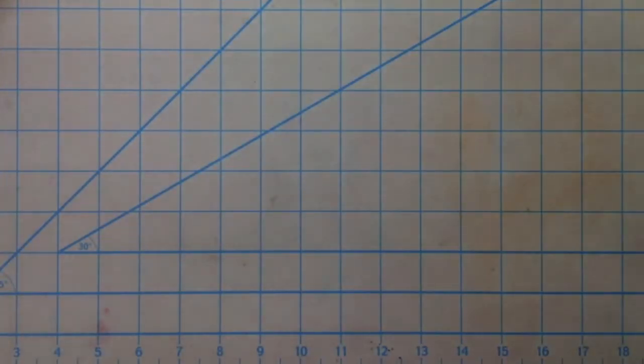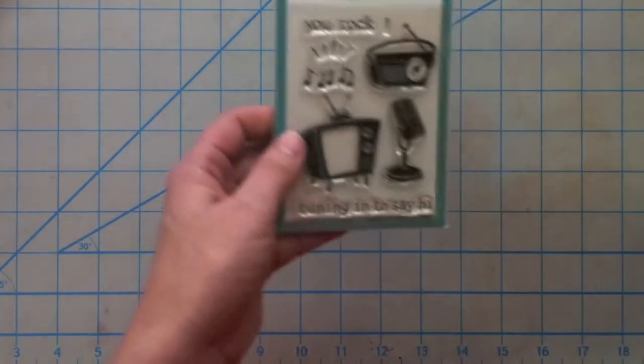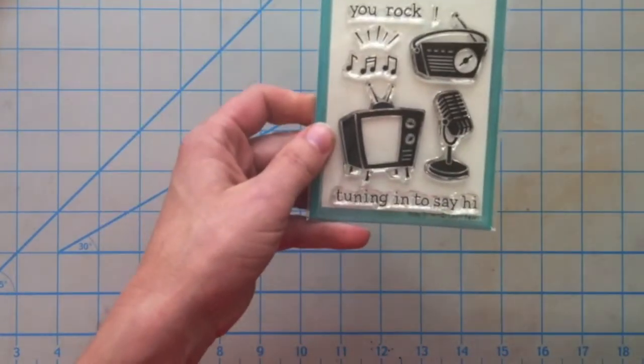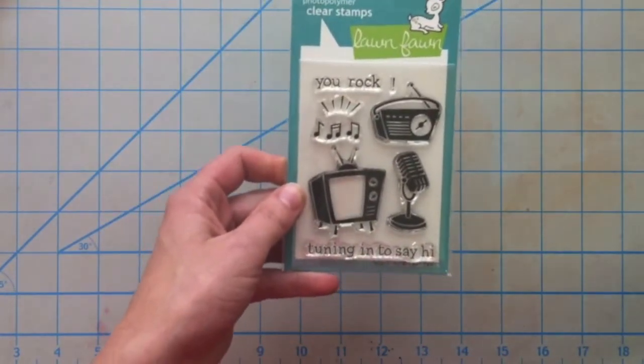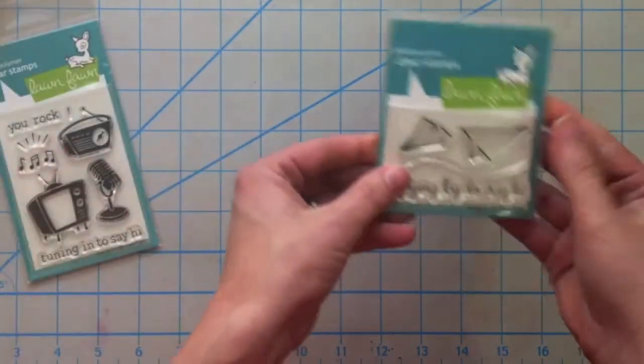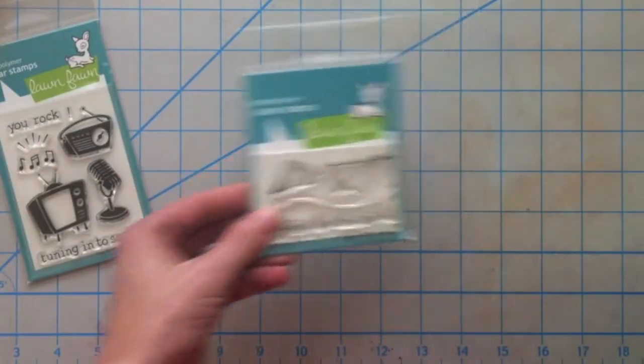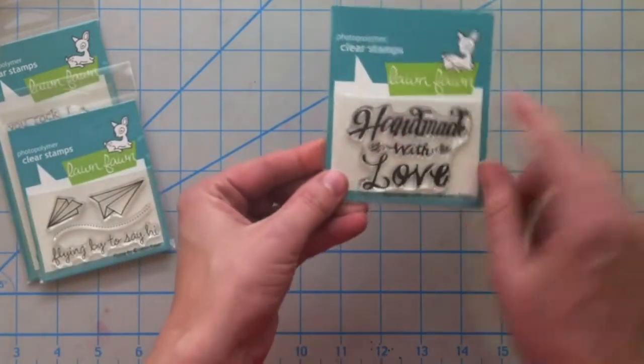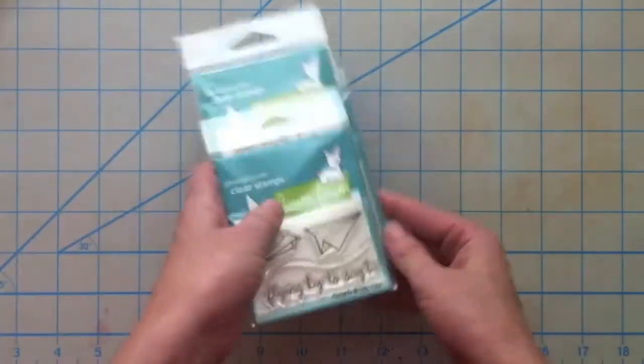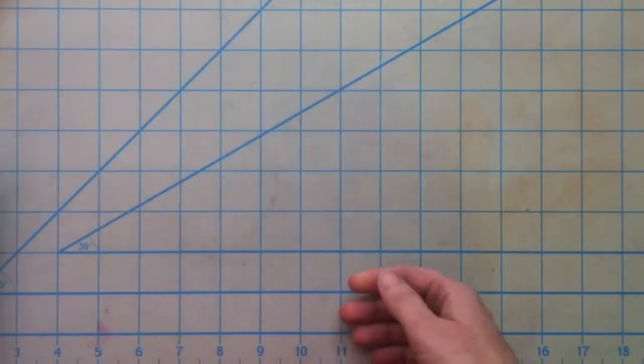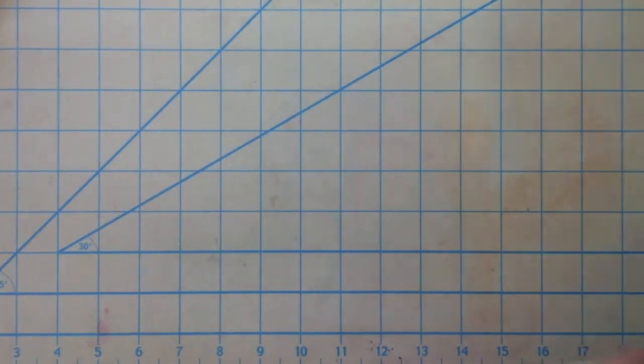Now I'll show you all of my Lawn Fawn goodies. I'm sure you guys have already gotten your stuff and if they're sold out never fear, they've probably already placed their next order. I'll start with the mini sets. This is called Stay Tuned, this is all Lawn Fawn now. This is called Flying By - I love those paper airplanes. And this is Handmade With Love. This is a nice stamp you can put on the back of your card so people will know that you actually handmade them and these aren't things you can just buy at the store like Hallmark.